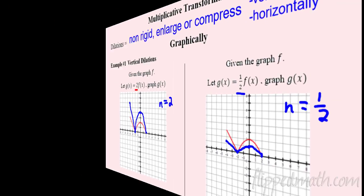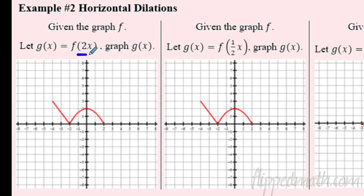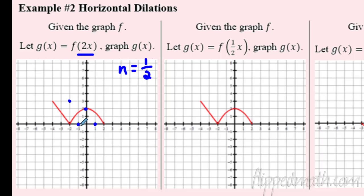Now let's dilate horizontally. When it's inside the parentheses, it's acting on the input — the x direction. Remember, everything is opposite of what you'd think: just like plus means go left, when I see a factor of two inside, it's actually a factor of one half, so I'm going to halve it horizontally. Negative four gets halved to negative two, negative two gets cut in half to negative one, zero stays at zero, and two becomes one. That squishes it — a horizontal compression by a factor of one half.